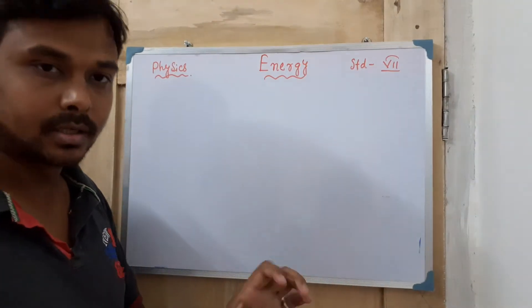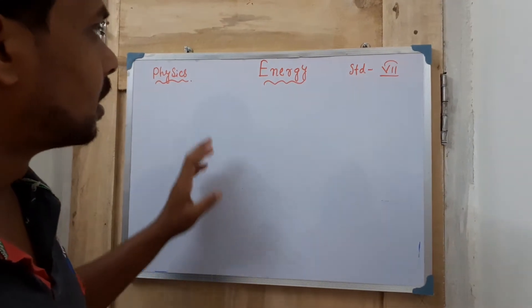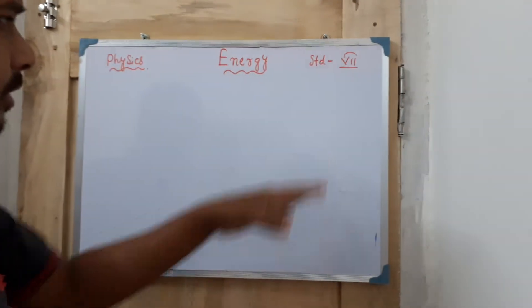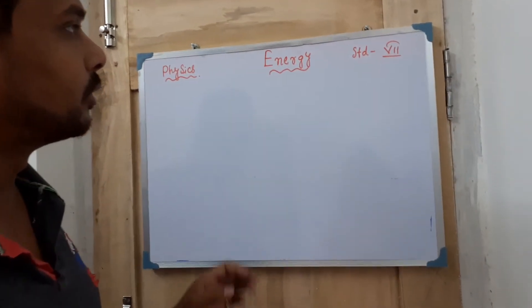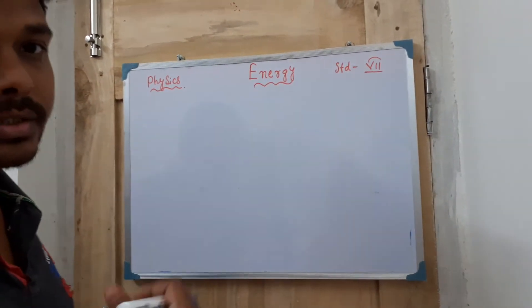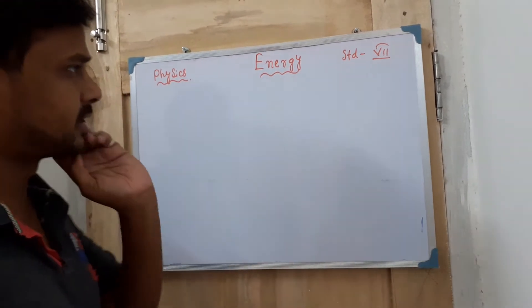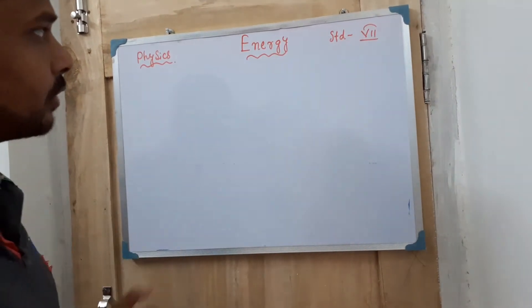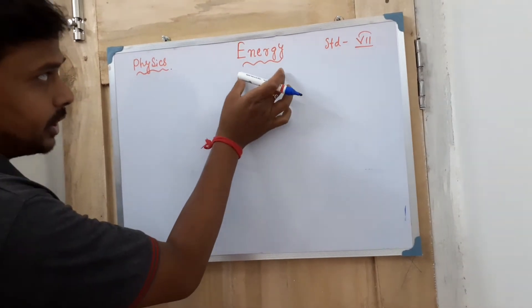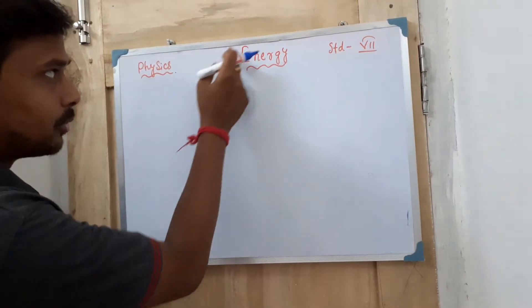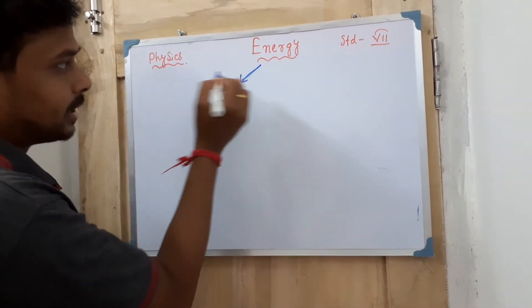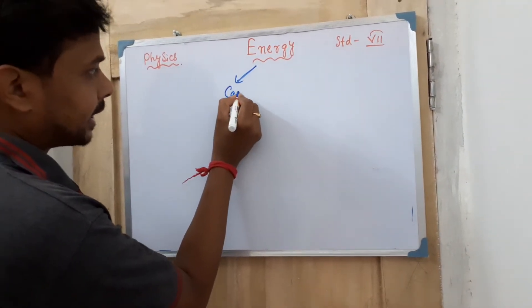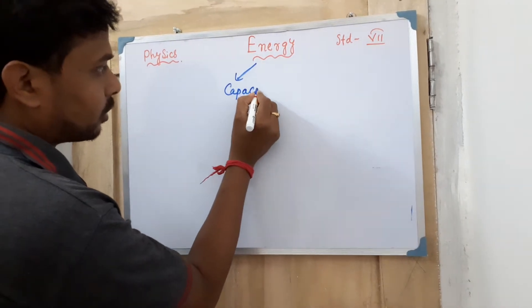Hello students of class 7 standard. Today we will discuss the energy chapter. I have already finished this chapter with you, so this is a revision. I am telling you the main important parts, and then we will discuss question answers. First of all, when you read this chapter, you have to understand what energy actually is — it is the capacity of doing work.